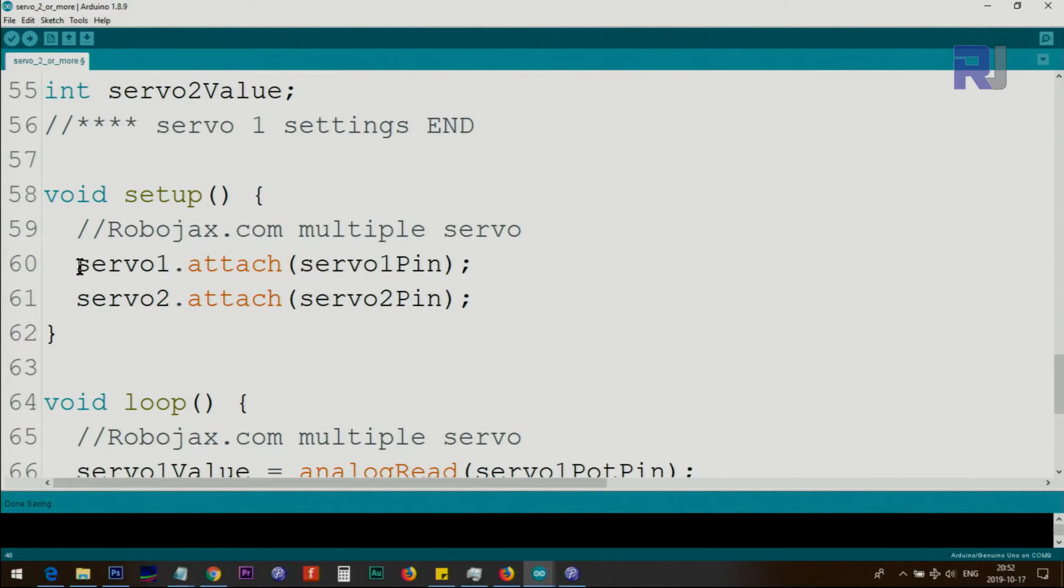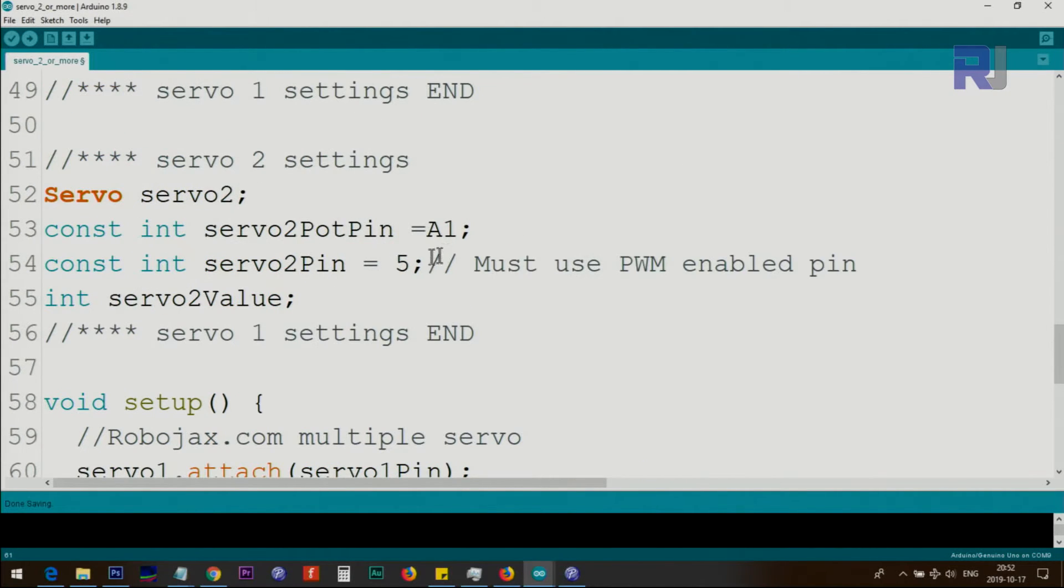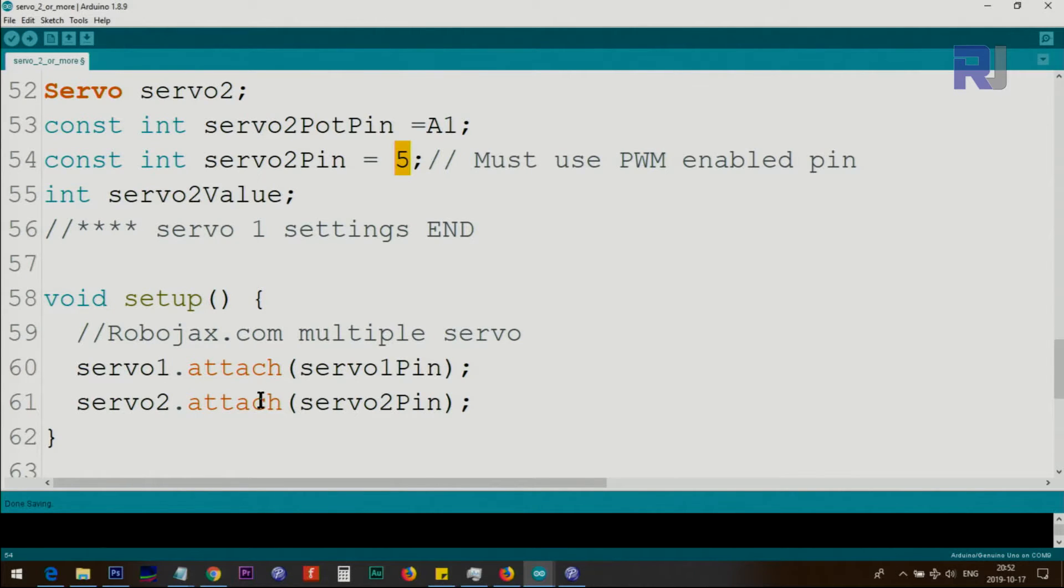Inside the setup we initialize or attach a pin to servo 1 using servo1.attach servo1Pin and then servo 2 also. If you want to create three, four, or as long as you have analog input, just copy and paste it and change this 1 to 2 and for example for 3 just change this to 3, 3, 3 and assign for example analog 2 and another pin here. Also in here the same way servo2.attach servo2Pin and then if you have three just copy and paste it and change it to 3 and 3 and so forth.